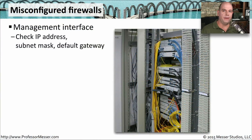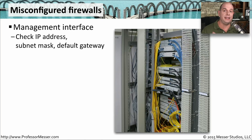When you're working on configuring a firewall, there are a number of things that can go wrong. You should first look at how you're accessing the firewall — check the management interface. This is often another interface on the firewall that is completely separate from the firewall interfaces. You want to check the IP address, subnet mask, and default gateway, as if you were configuring it as an individual device.